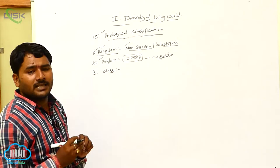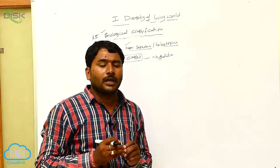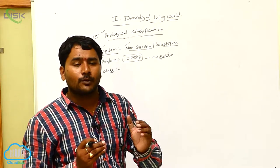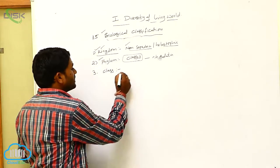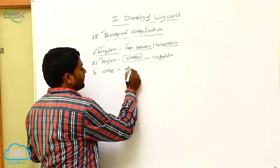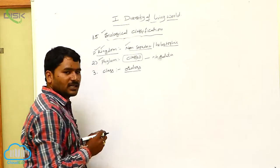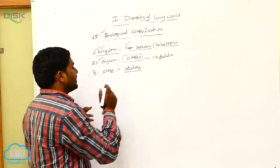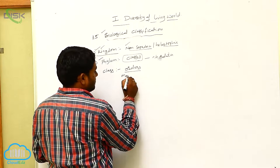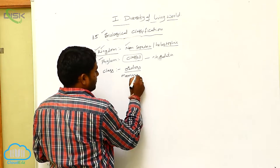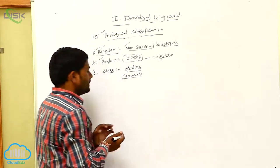Class is a group of one or more closely related orders. For example, if you take mammals, mammals have different types of orders.